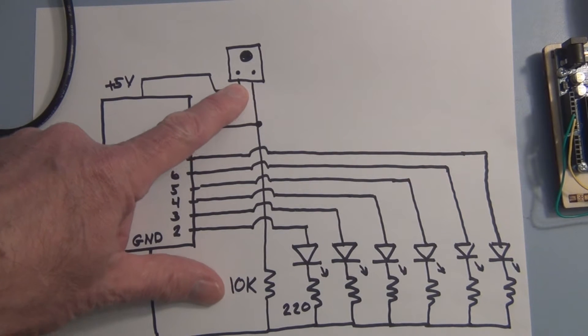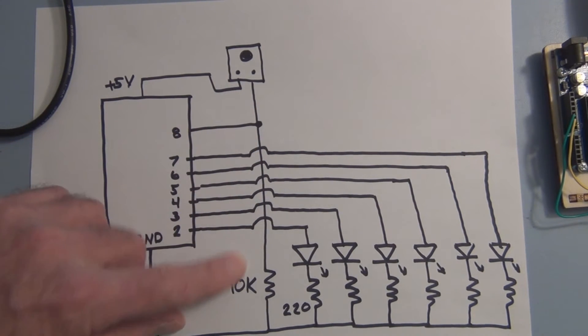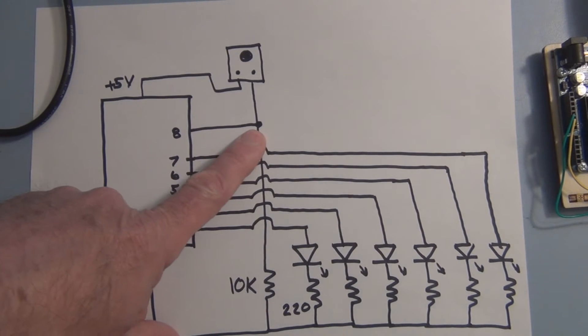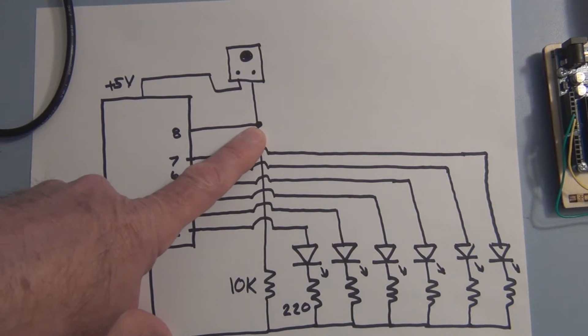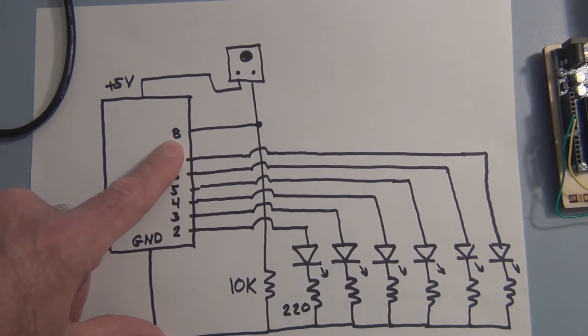Here's the tilt switch, and it goes to ground through a 10k resistor and it's connected to pin eight. So we're measuring the voltage on the tilt switch pin at pin eight.